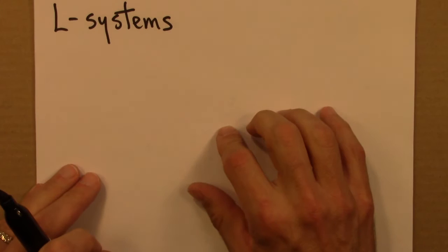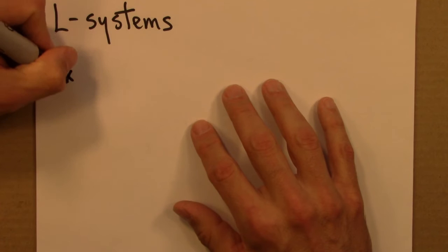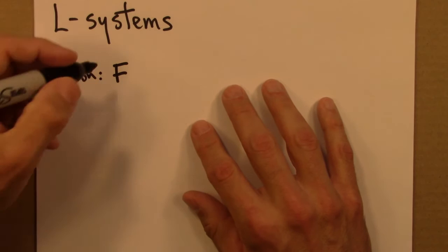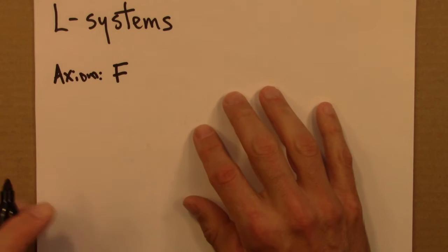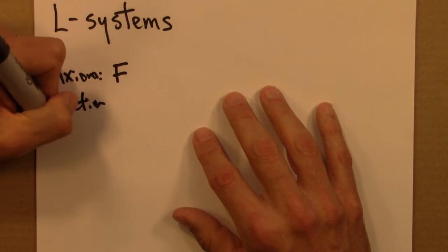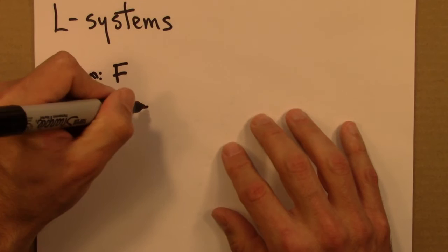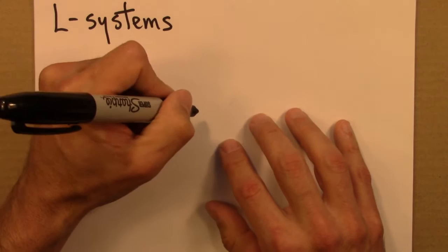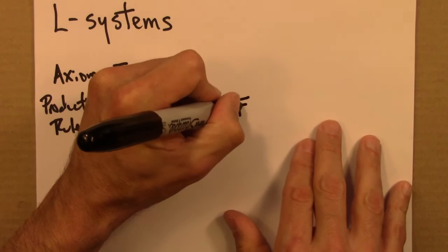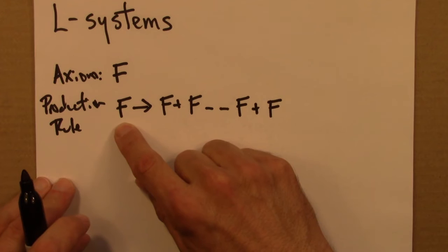One starts with a starting point, what else would one start with? And that's called an axiom. I'll denote F for this. And then there's something called a production rule. That's a transformation from one symbol to another symbol or a bunch of symbols. In this case, we do the following. The rule is F gets transformed to F plus F minus minus F plus F. This isn't something you do arithmetic to, but this is a series of instructions, as I'll explain in a moment.